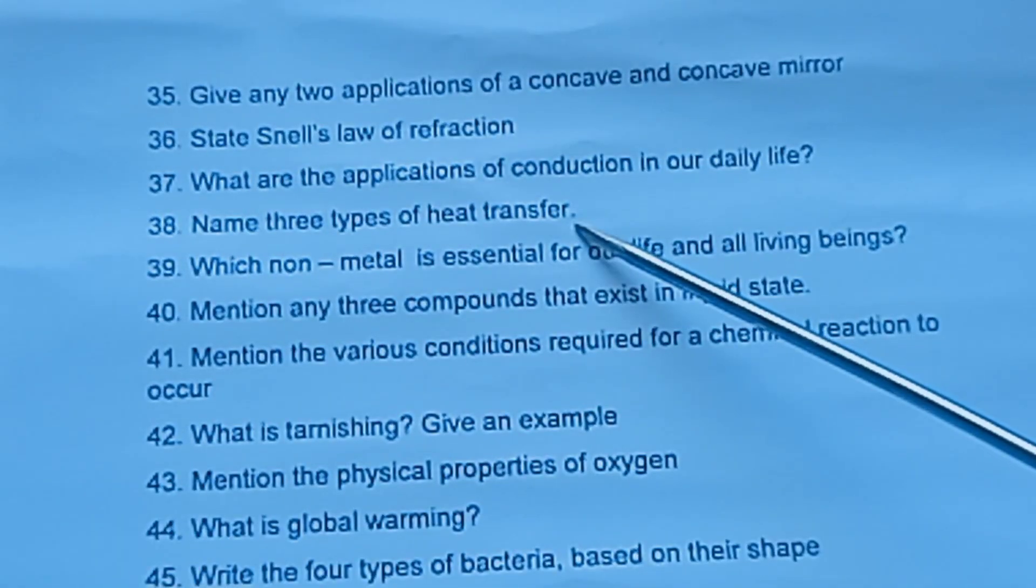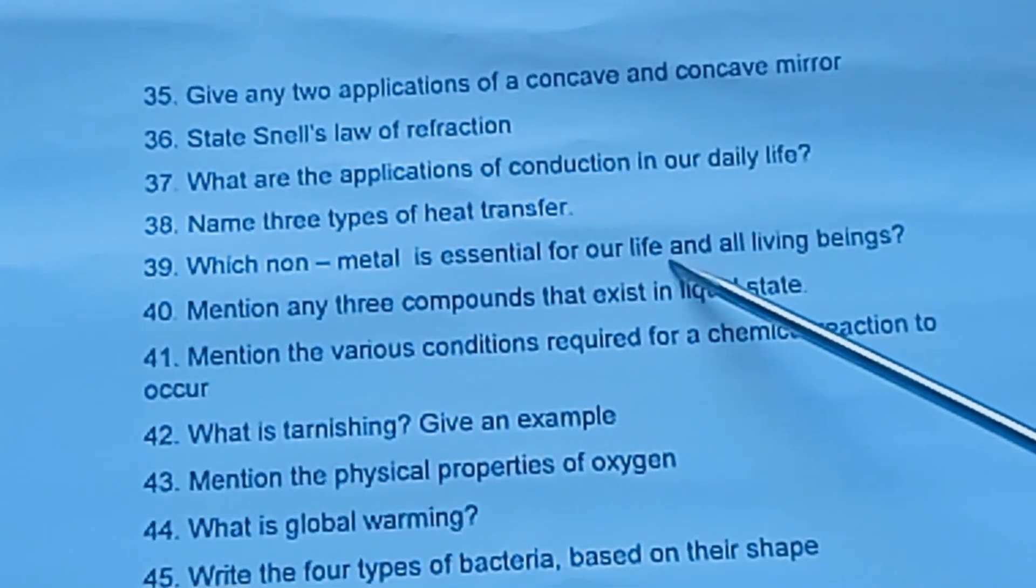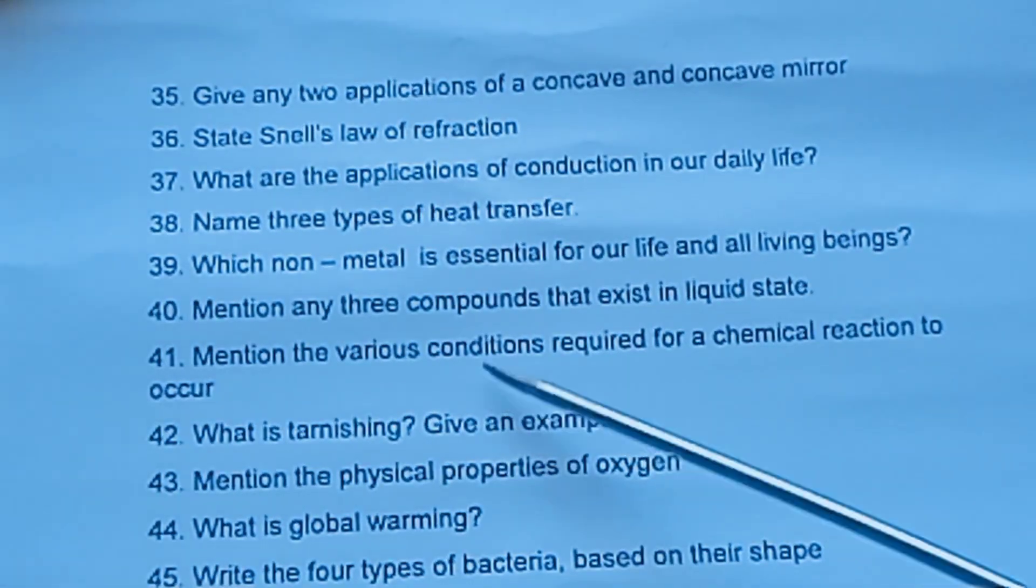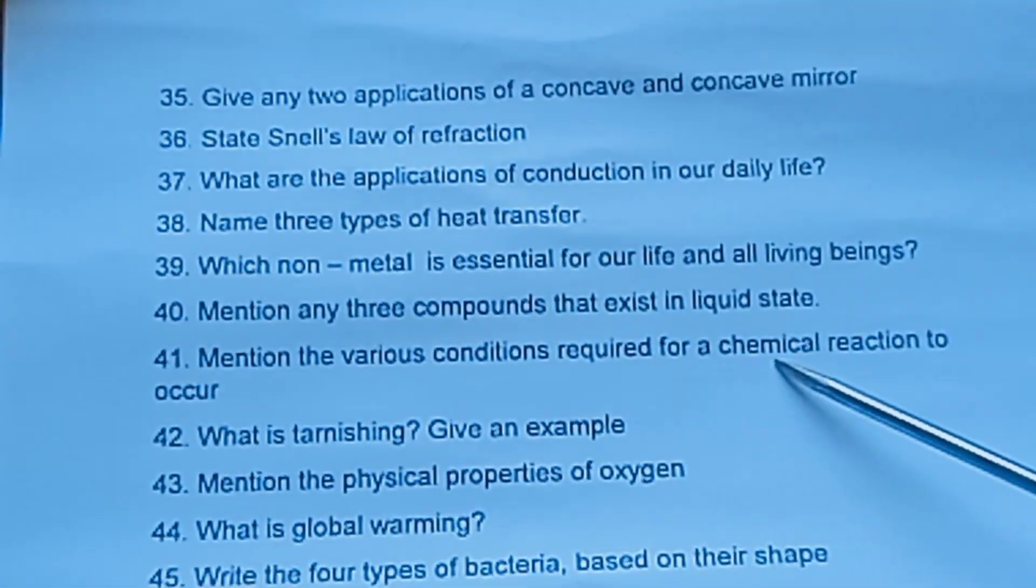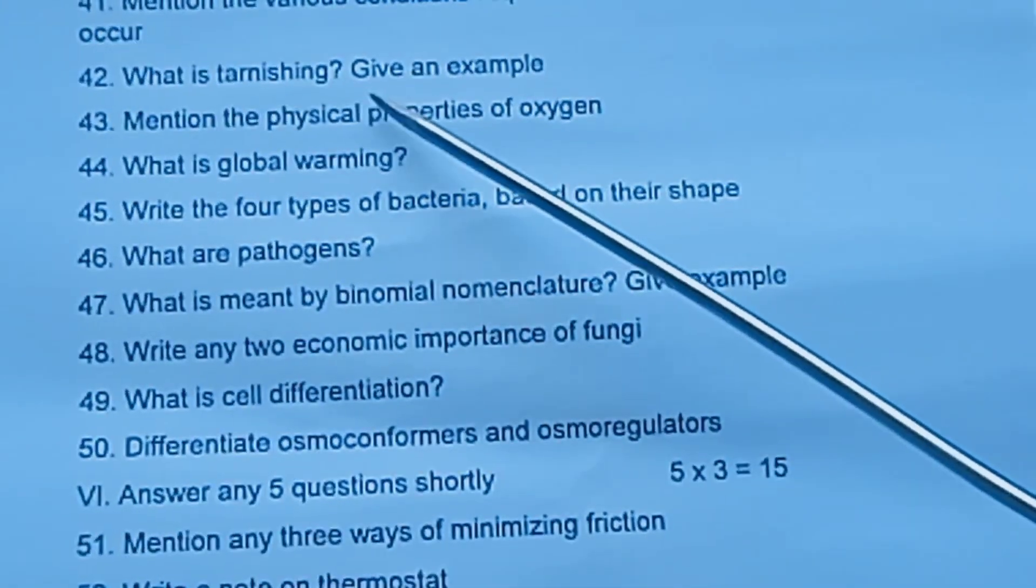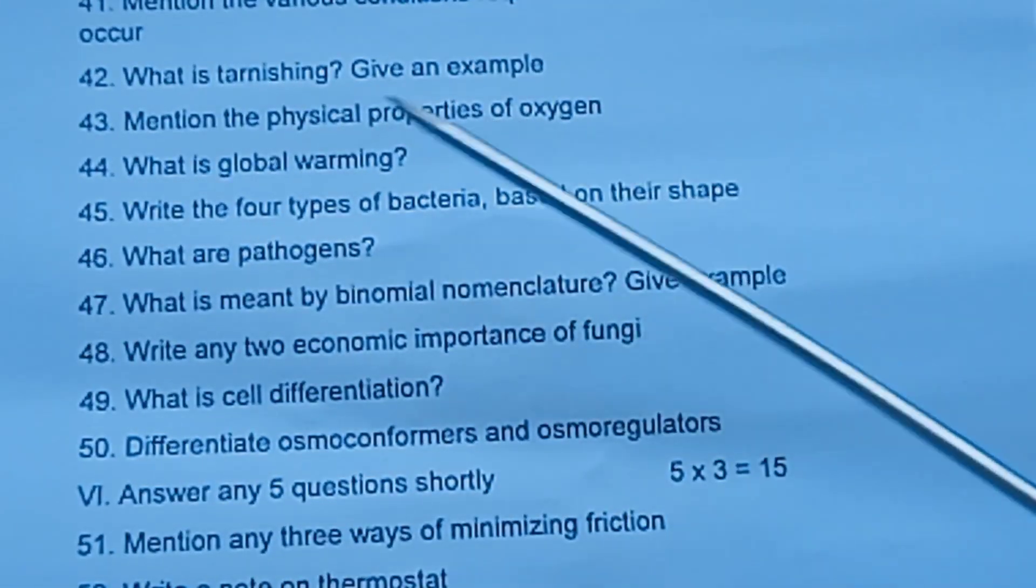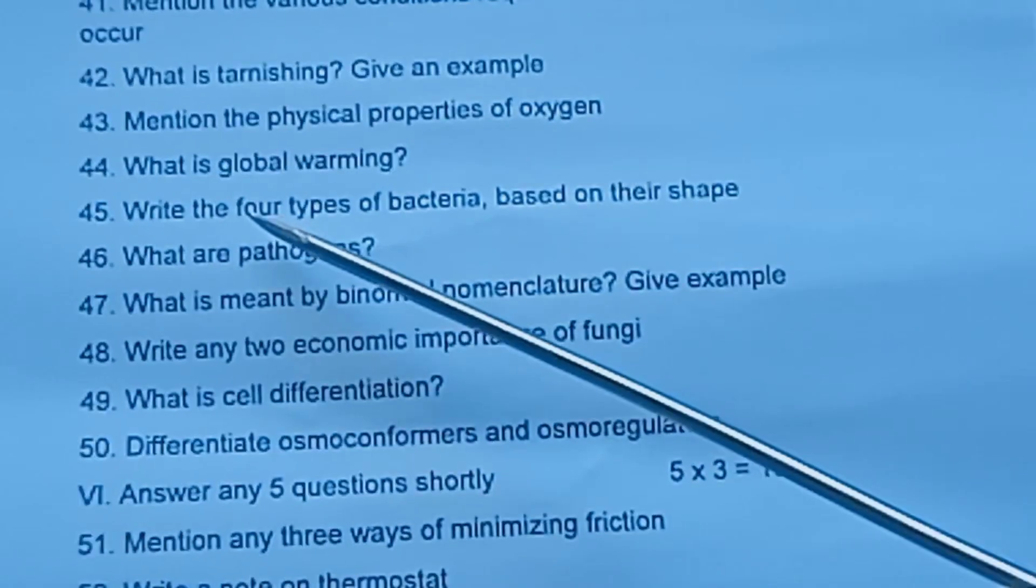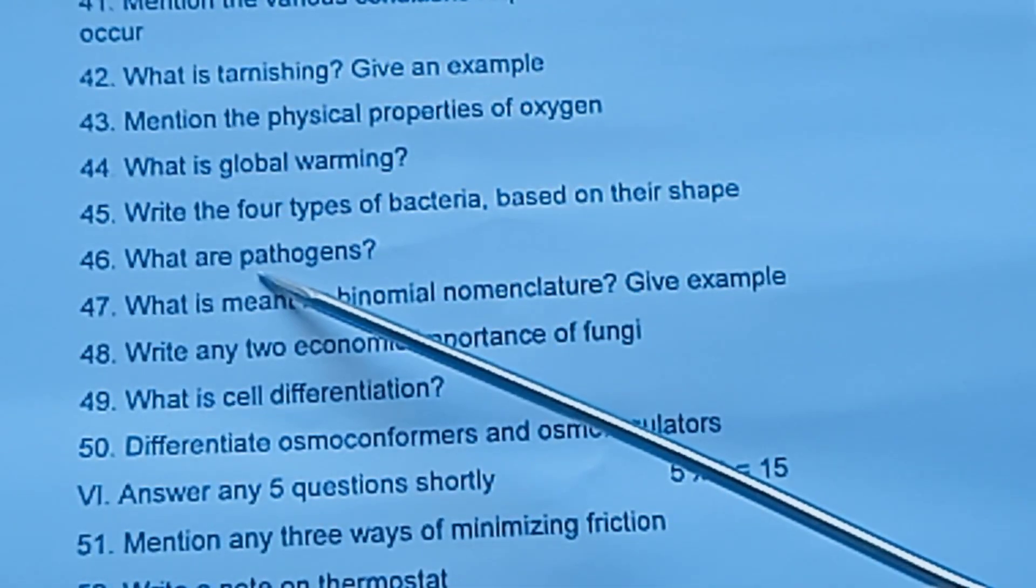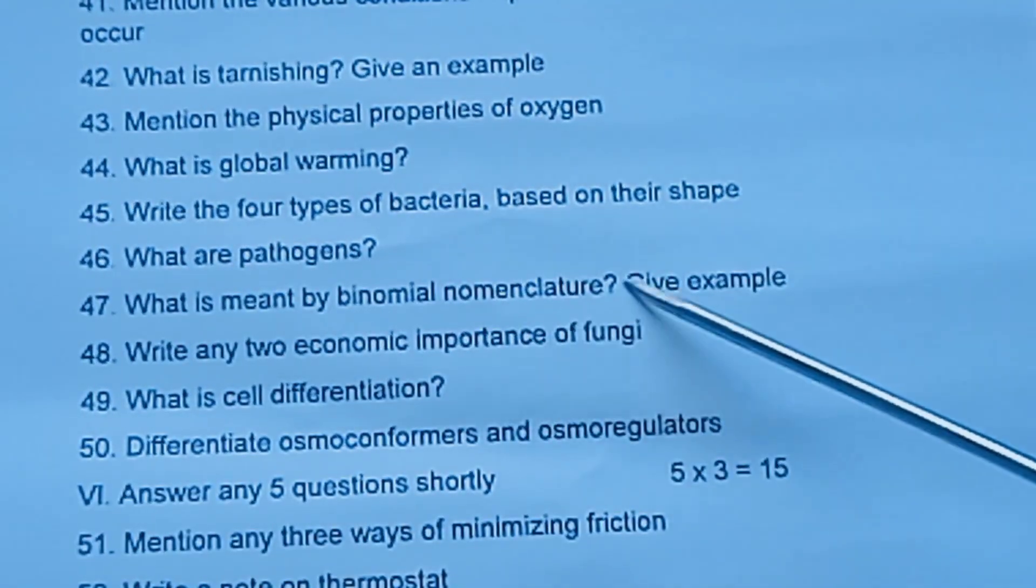Question 38: Name three types of heat transfer. Question 39: Which non-metal is essential for our life and all living beings? Question 40: Mention any three compounds that exist. Question 41: Mention the various conditions required for chemical reactions to occur. Question 42: What is tarnishing? Give an example. Question 43: Mention the physical properties of oxygen. Question 44: What is global warming? Question 45: Write the four types of bacteria based on their shape. Question 46: What are pathogens? Question 47: What is meant by binomial nomenclature? Give example.